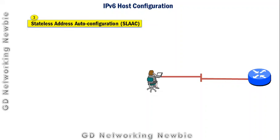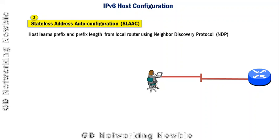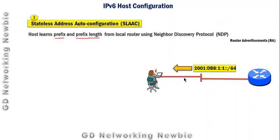The third method is Stateless Address Auto Configuration, or SLAAC. In this case, hosts learn the prefix and prefix length from the local router using a protocol called Neighbor Discovery Protocol. The host machine learns the prefix and prefix length because the router announces this prefix and prefix length using a message called a Router Advertisement.